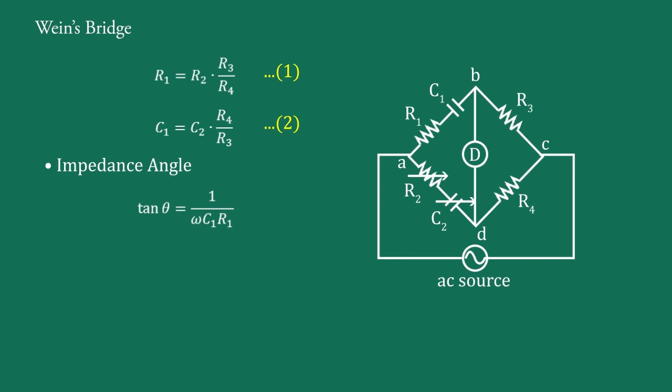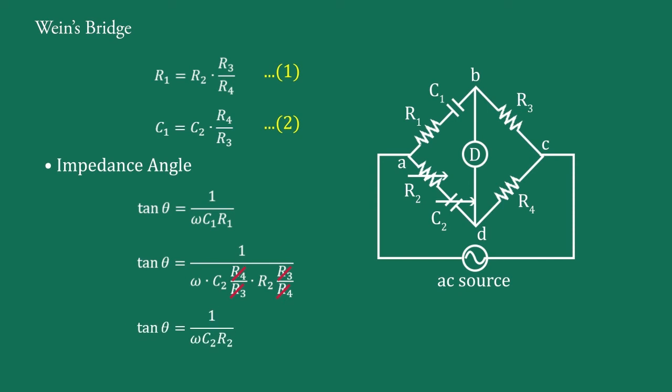Substituting the values of R1 and C1 from Equations 1 and 2, we get tan θ = 1/(ω·(C2·R4/R3)·(R2·R3/R4)). The R4 and R3 terms cancel, and hence tan θ = 1/(ωC2·R2), and therefore θ = tan⁻¹(1/(ωC2·R2)).